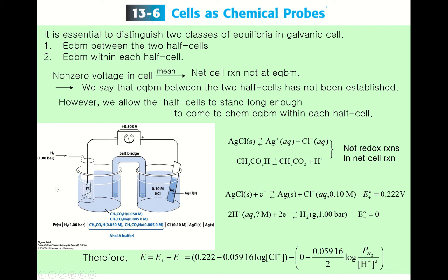Let's consider a seemingly complicated electrochemical cell. On the right-hand side is the cathode, where silver metal coated with silver chloride is inserted in a solution containing potassium chloride. On the left side is a platinum electrode to which hydrogen gas is provided at a pressure of one bar.